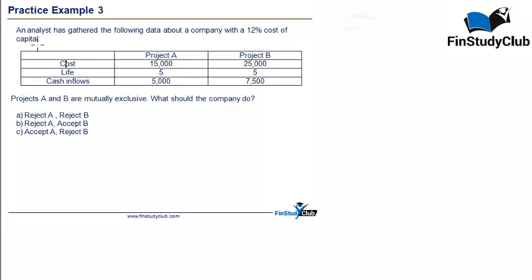This question states: an analyst has gathered the following information about a company with a 12% cost of capital. Project A and B, the cost is 15,000 and 25,000. The life is five years and five years and the cash inflows for each of these years, these must be per annum, is 5,000 and 7,500.